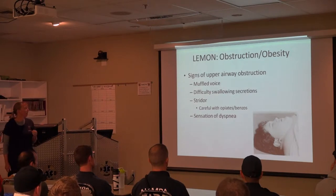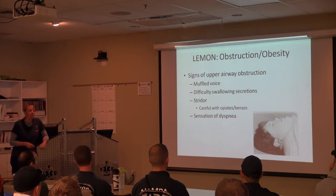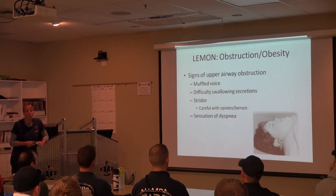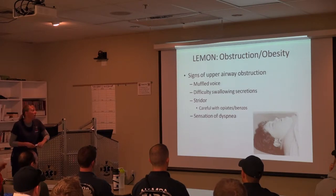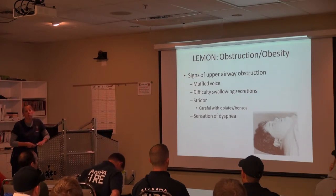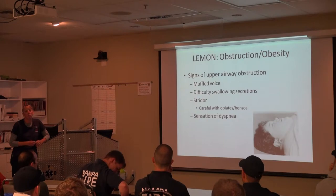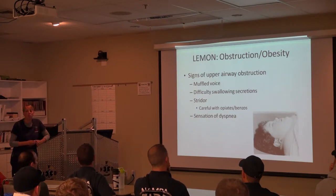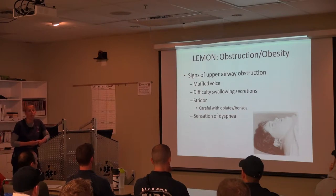Obstruction and obesity — look for signs of muffled voice, such as peritonsillar abscess or prevertebral abscesses in children. Difficulty swallowing secretions — the classic teaching is epiglottitis with the patient sitting forward spitting out saliva. This also happens with peritonsillar abscesses and supraglottic swelling. When you have stridor and give opiates or benzos, you're actually taking away the airway stenting that patient is doing, so there can be rapid clinical deterioration.